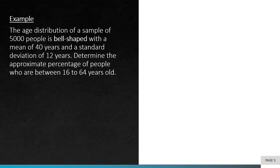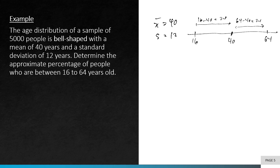Let's take a look at this example. The age distribution of a sample of 5,000 people is bell-shaped, with a mean of 40 years and a standard deviation of 12 years. Determine the approximate percentage of people who are between 16 to 64 years old. The first thing we need to do is write down the information given: the mean is 40 and the standard deviation is 12. To help us further, we can visualize this information.